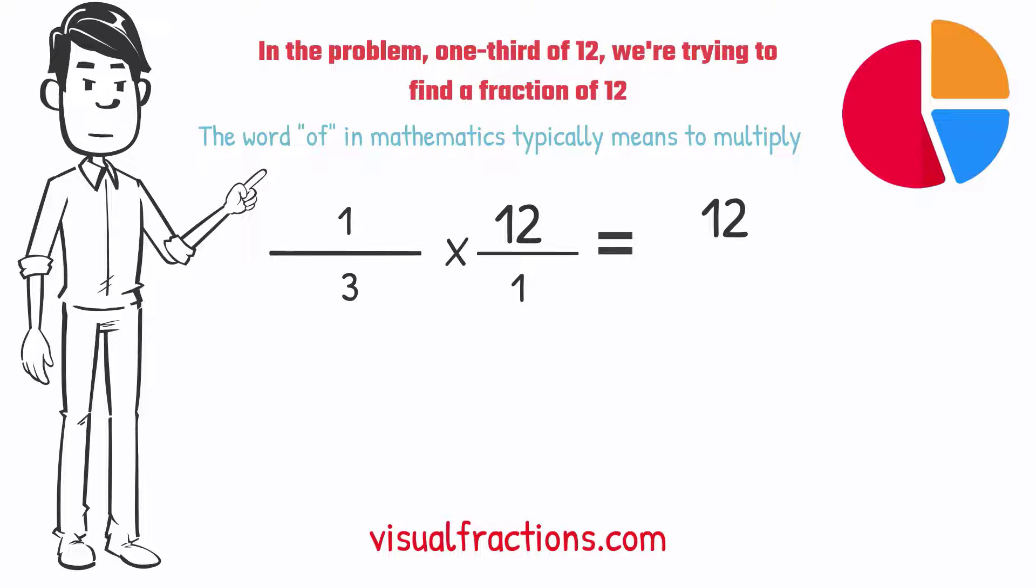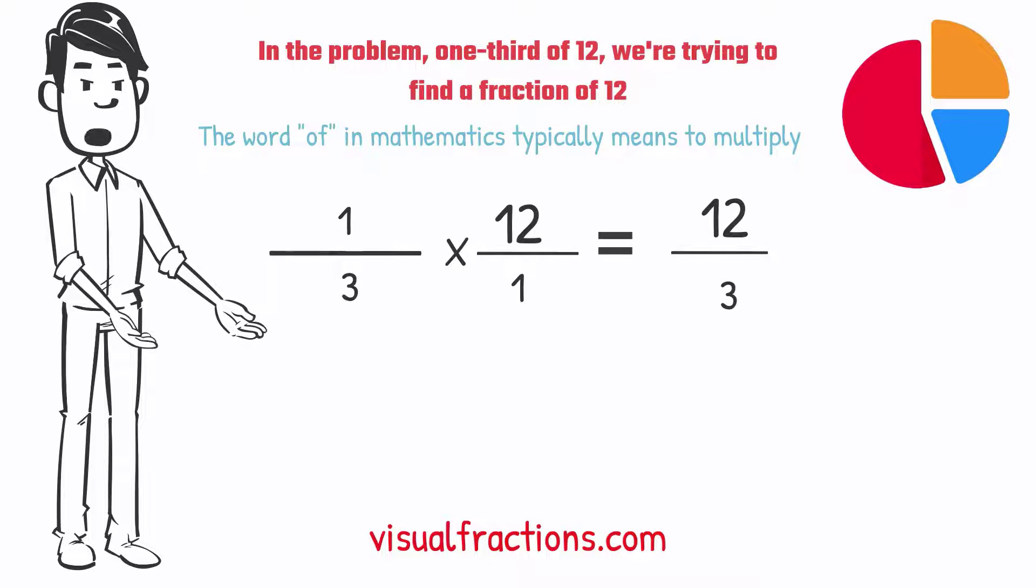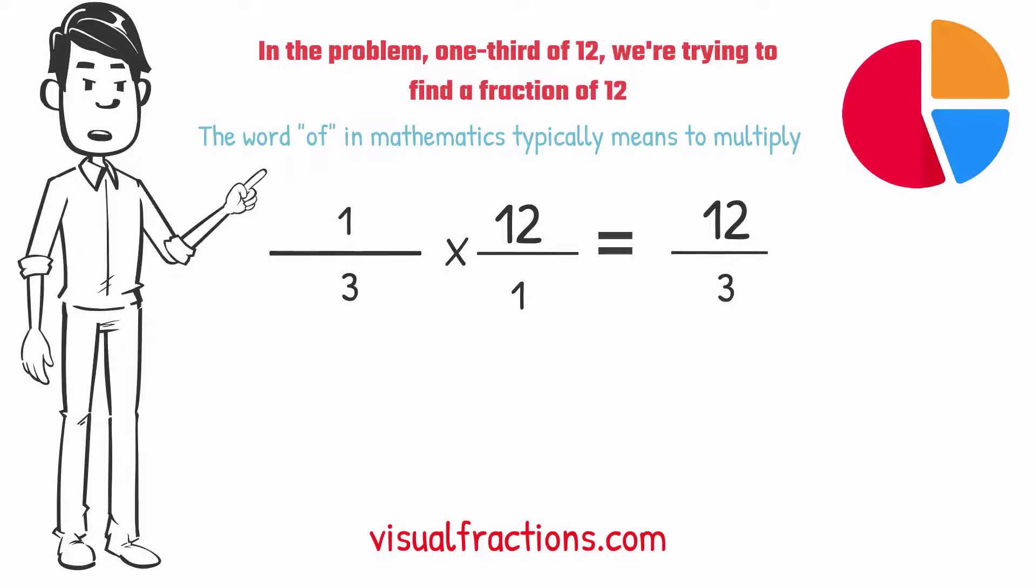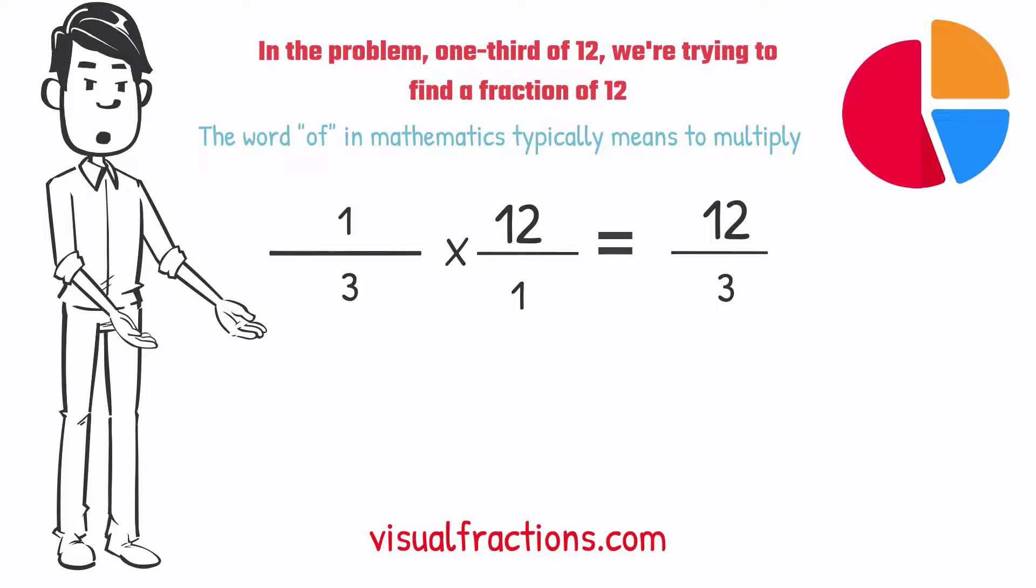Next, multiply the denominators, 1 times 3 equals 3. We now have a new fraction, 12 thirds. To find the final answer, divide the numerator by the denominator.